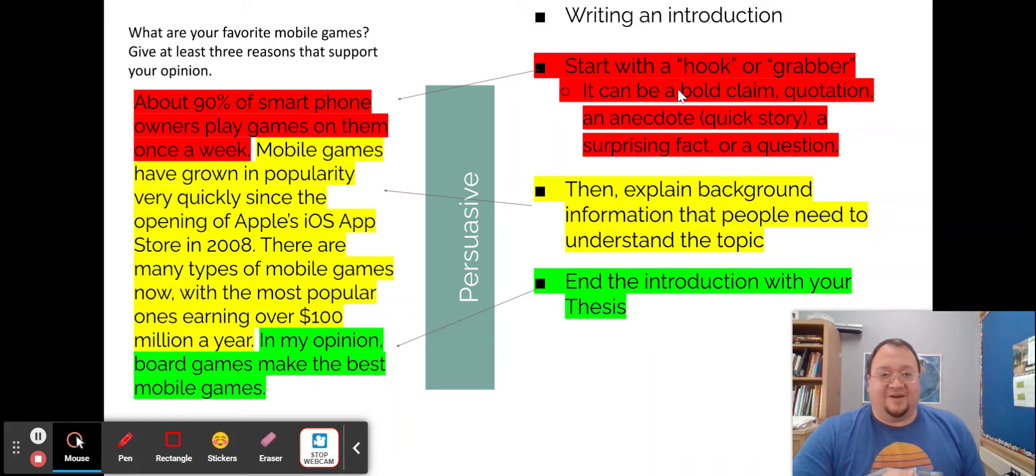And there's a few choices there. You can make a bold claim, like here's something that I believe or that is a belief that people can have that gets people's attention. A quotation, if there's something that a famous person said, or like a celebrity or president. An anecdote, that's like a quick story from your own life. A surprising fact, or a question. These are all things that can get the attention of the person who's reading.